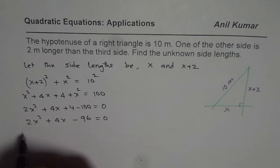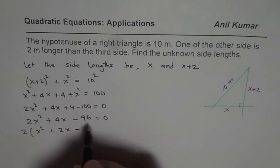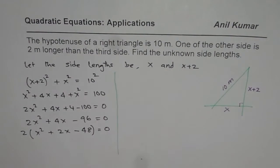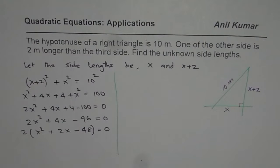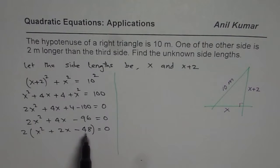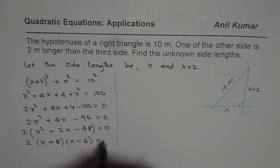We can divide by 2 — taking 2 as common — to get x² + 2x − 48 = 0. Now we have a quadratic equation, which can be solved either by factoring or by the quadratic formula. For factoring, we look for two numbers whose product is −48 and sum is 2. Those numbers are 8 and −6, so we write this as (x + 8)(x − 6) = 0.